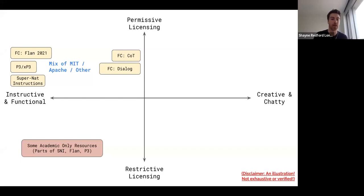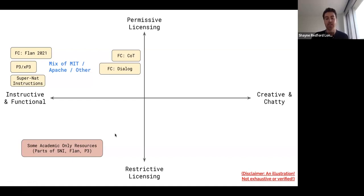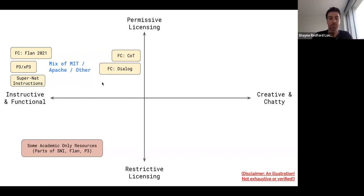On the left-hand side, more instructive and functional tasks are comprised of academic benchmarks — large parts of Super-Natural Instructions, the FLAN and P3 benchmarks — which have more restrictive licensing. But parts of them, also in the FLAN collection, have a mix of Apache, MIT, and other licenses, meaning some could even be used for commercial use. The chain-of-thought and dialogue portions of those collections are a bit more toward the creative, chatty end.